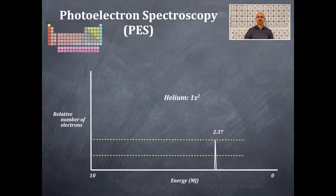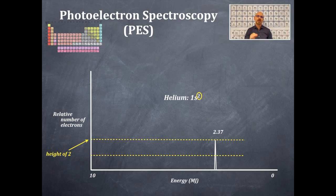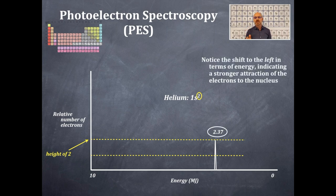The next element is helium, which is 1s2. Notice the height of this peak — keeping the same reference dashed yellow line from hydrogen, this peak is twice that height. Therefore there are two electrons in here. The megajoules value has changed to 2.37. That height of 2 corresponds to the two electrons in the 1s2 orbital. Notice there's a shift to the left in terms of energy, indicating the stronger attraction of the electrons to the nucleus — that 2.37 is higher in energy, shifting away from zero towards 10 megajoules.